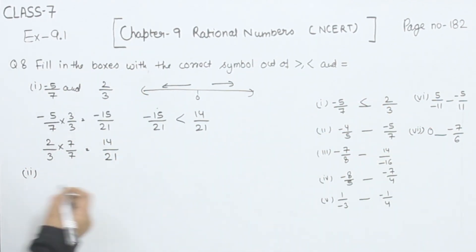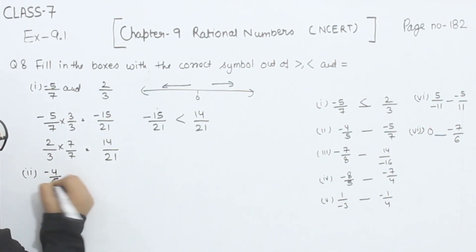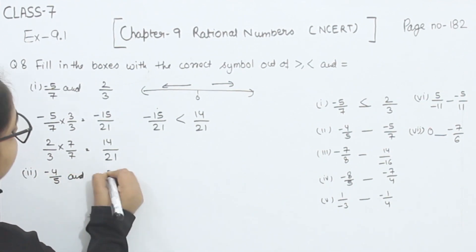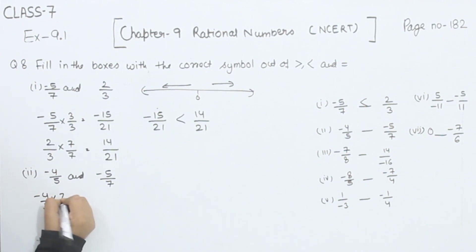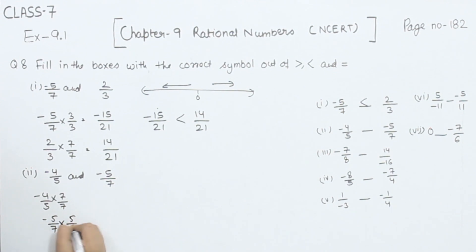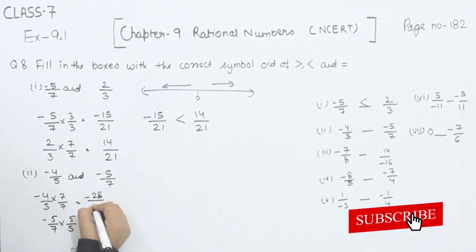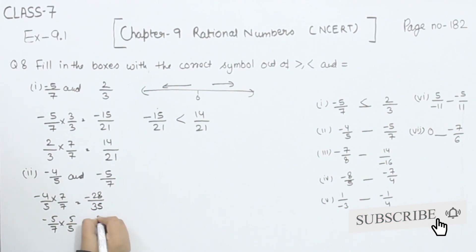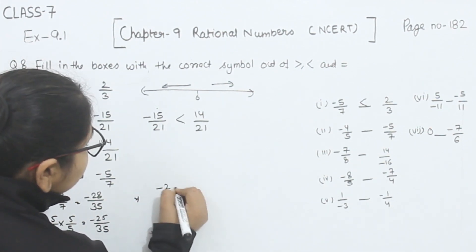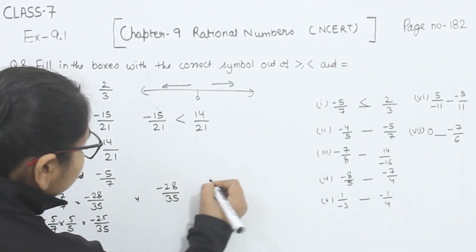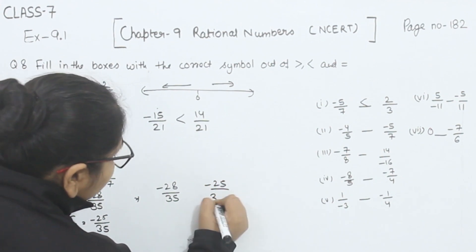Now comes part 2. In part 2, we have minus 4 by 5 and minus 5 by 7. We will multiply each by the other's denominator. So 7 × 4 = 28 and 7 × 5 = 35, and 5 × 5 = 25 and 7 × 5 = 35. We are now having minus 28 by 35 and minus 25 by 35.